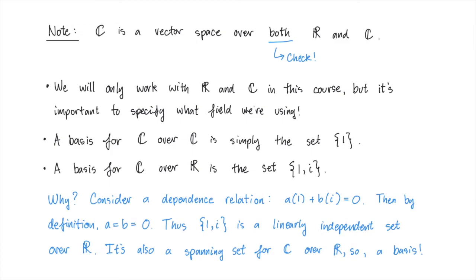However, it's very important to note that these two elements are not linearly independent when we think of C as a vector space over C. Pause the video and write down a dependence relation which shows this, to make sure that you're following along.